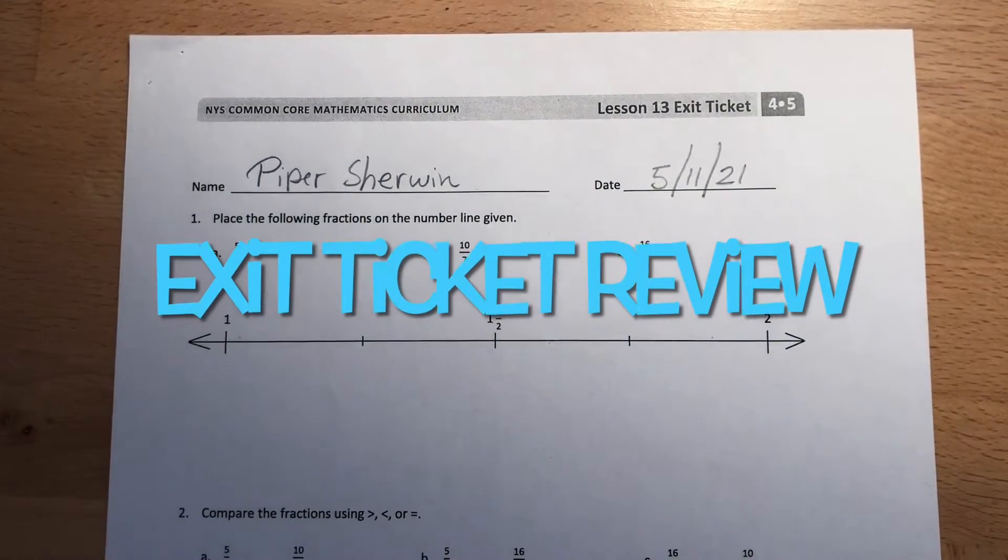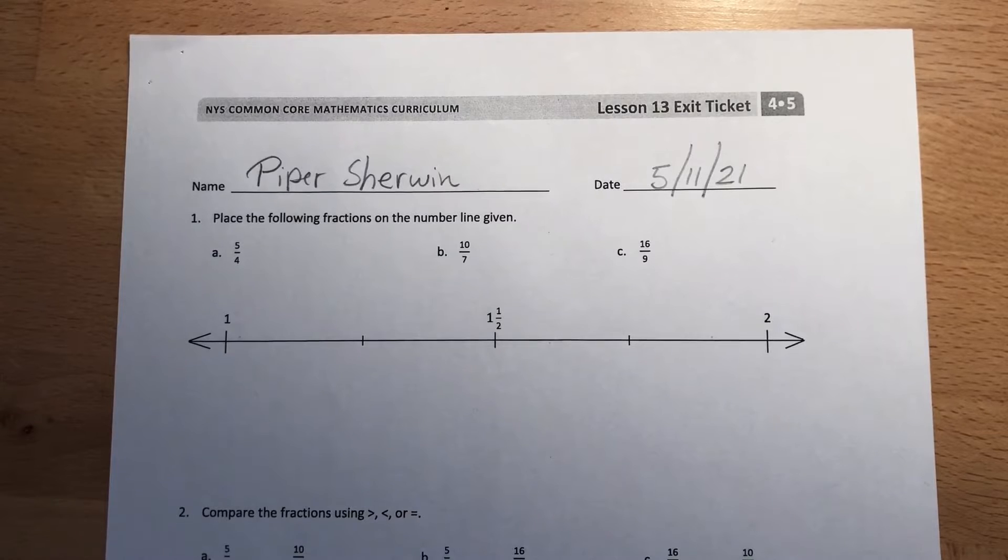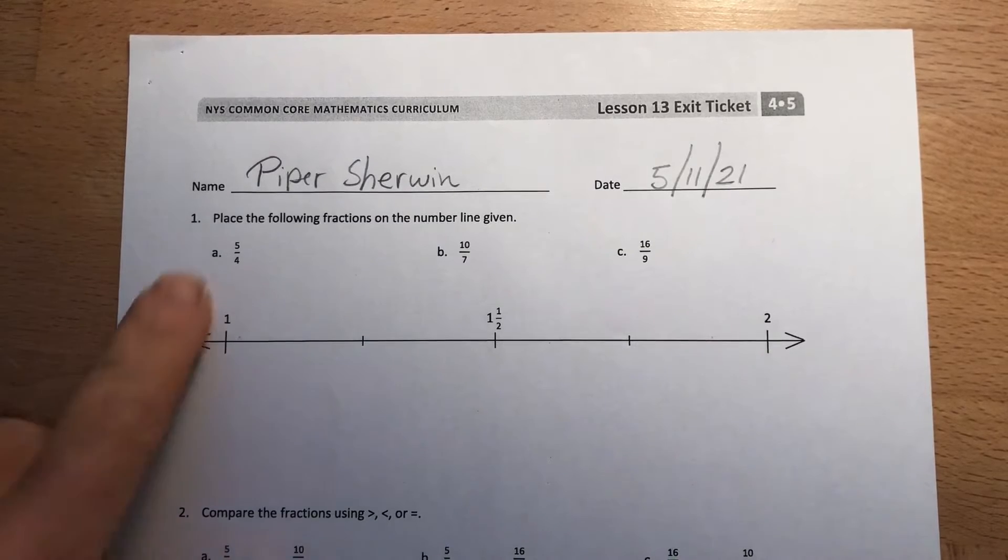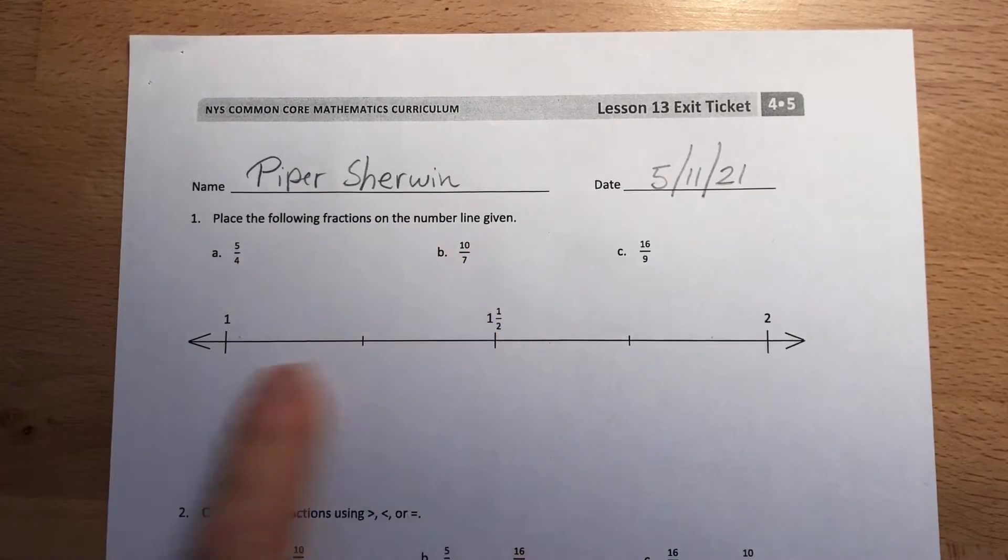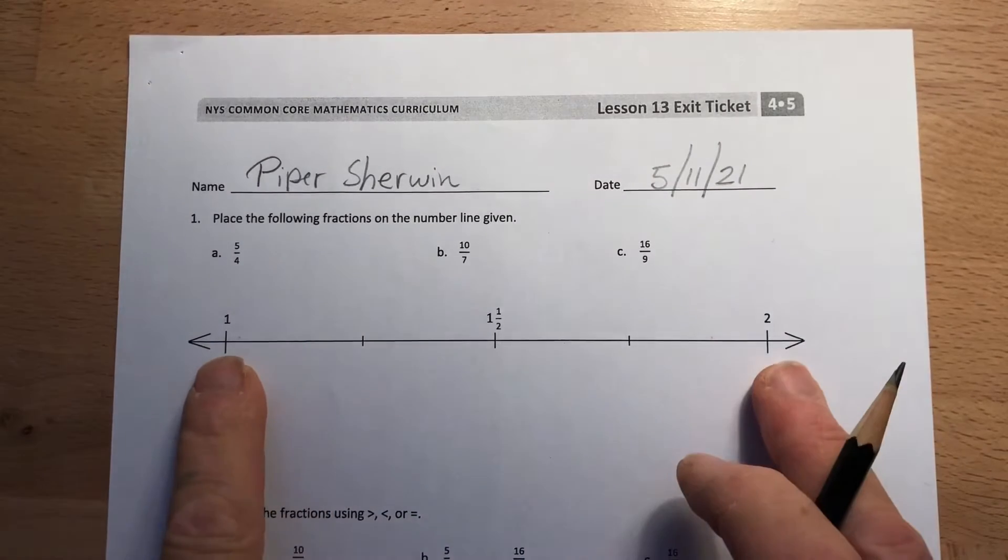All right fourth graders, here we are today. We're not starting off with the shape attributes, that's done, so we're just going to jump into the exit ticket from last time. We're going to place the following fractions on the number line given. So here's the number line, goes from 1 to 2, it's got a benchmark of one and a half in the middle.